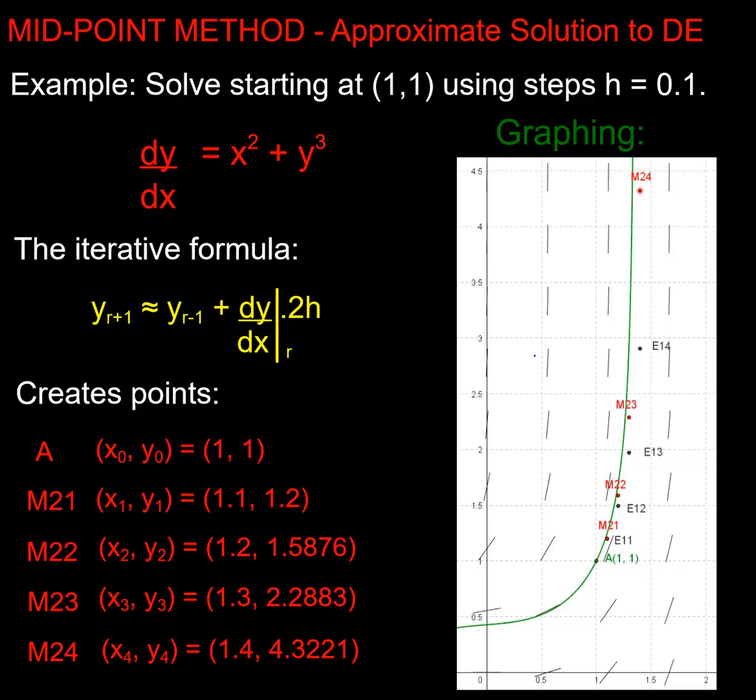So let's have a look at that graphically. Here are the points I just worked out—I've called them M here on my graph and they're the red ones because they're my midpoint calculations. So this little dot here is my M21, it's going to be the same as my E, my Euler point—those two are both the same at this point. But look what's happening now: my midpoints are staying very close to my computerized projection, whereas my Euler points are drifting away. So I think you can see that this is a more accurate method than Euler.